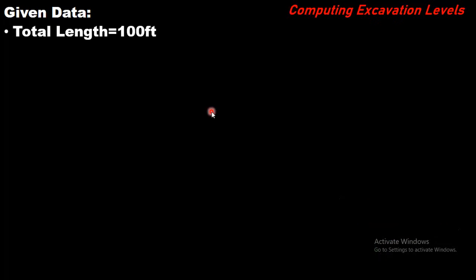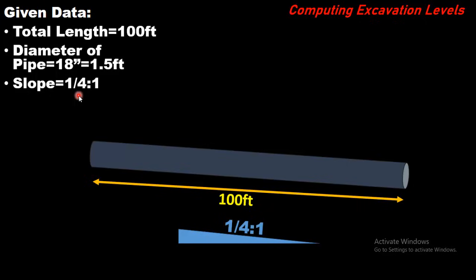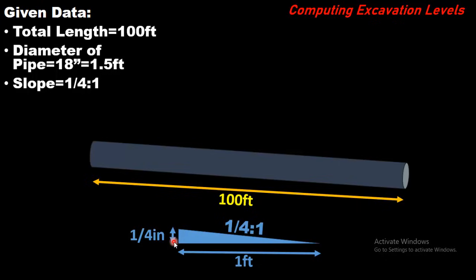First, the given data: total length of the pipe is 100 feet, and the diameter of the pipe is 1.5 feet. This is the data normally mentioned in the plans of the sewer line or drainage line. The slope of the pipe — this slope is adopted for drainage, considered good, and can be called a non-scouring and non-silting velocity. Normally a 1/2 to 1/4 slope is kept for drainage and sewer lines. The slope here is a 1 to 4 ratio, meaning that for every 1 foot of horizontal distance you rise 1/4 inch.